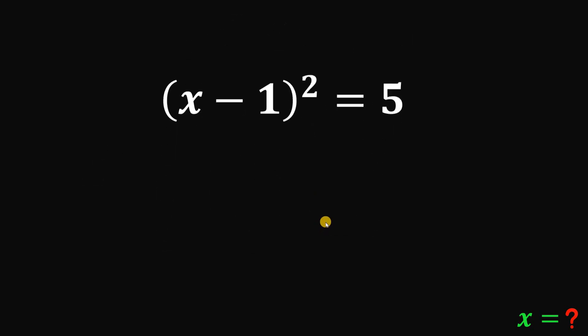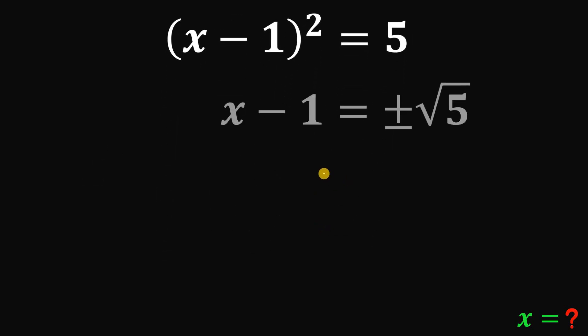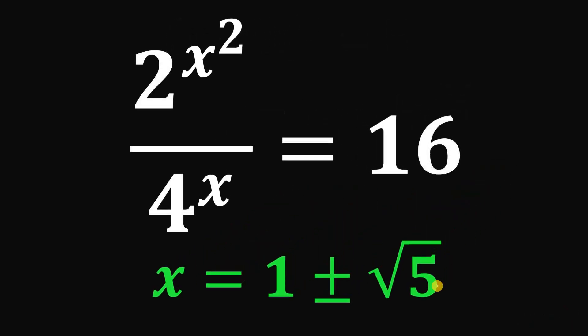Let's get the square root on both sides. And if we get the square root on both sides, we have x minus 1 equals positive or negative. Don't forget, we have two possible values here, positive or negative square root of 5. And add 1 on both sides, we get that x equals 1 plus or minus square root of 5. So, meaning, we have two different values for x. We have 1 plus square root of 5 and 1 minus square root of 5.